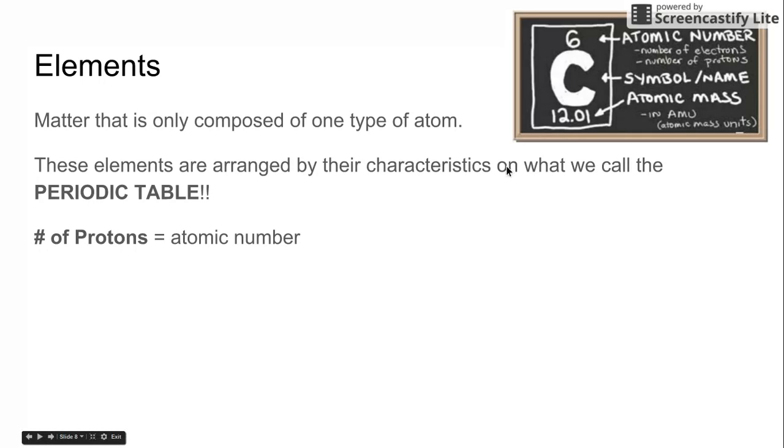The next thing we're going to talk about is the symbol name. And this is usually one or two letters, always starting with a capital that tells you what type of element you're looking at. So for instance, C stands for carbon. And now you know that carbon has an atomic number of six.